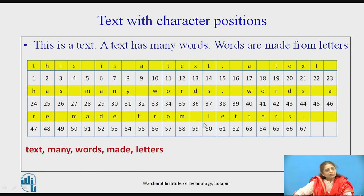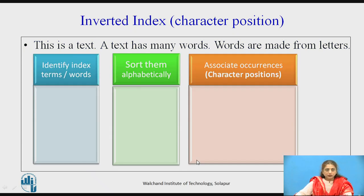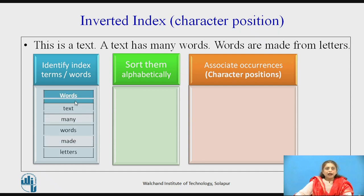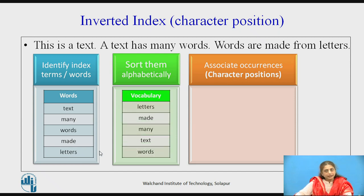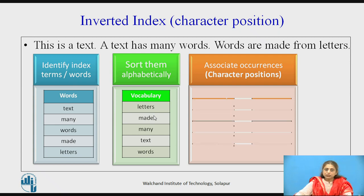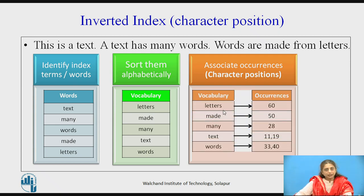After removing stop words, we have identified some words from the given text. These five words are taken as an example. The first step while building the inverted index is to identify the index terms or words. The second step is to sort them when storing in vocabulary — letters, made, many, text, and words are sorted and then stored in vocabulary. The third step is associating each word with its occurrences.